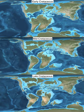The Cretaceous is a geologic period and system that spans 79 million years from the end of the Jurassic period, 145 million years ago, to the beginning of the Paleogene period, 66 million years ago. It is the last period of the Mesozoic era and the longest period of the Phanerozoic aeon. The Cretaceous period is usually abbreviated K, for its German translation Kreide.